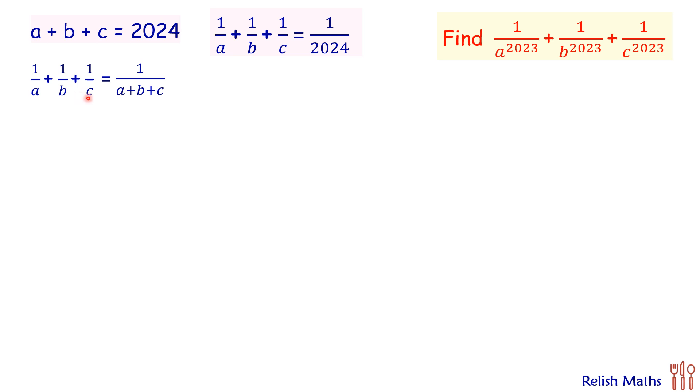Let's simplify it by shifting 1 over c on the RHS to get this expression. Now here, simplifying 1 over a plus 1 over b by taking LCM as ab. So LHS is a plus b over ab. Same way in RHS, let's take LCM as c times a plus b plus c.